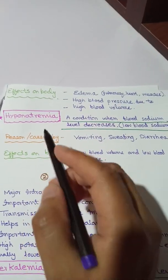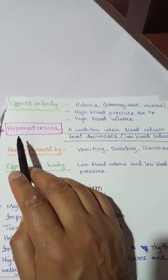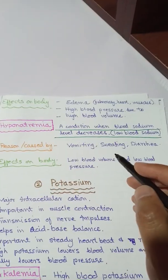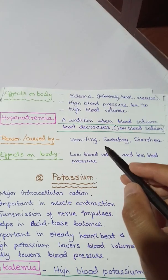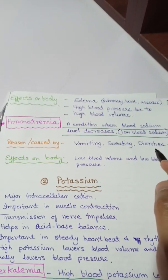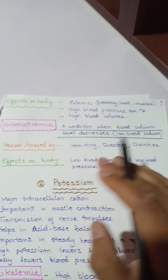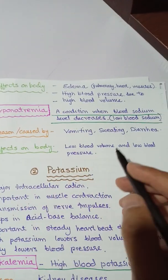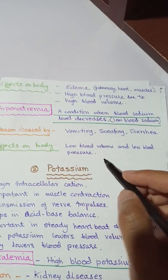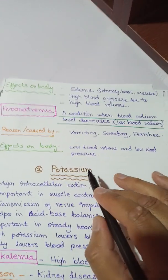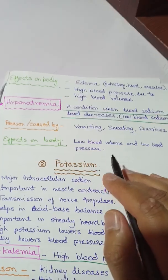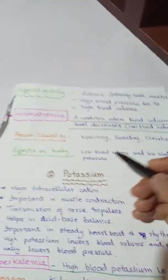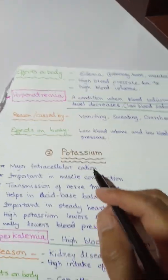The condition in which sodium level decreases or lowers in our body is called hyponatremia. It occurs due to vomiting, sweating, or diarrhea. The effects on our body include low blood volume, and due to low blood volume blood pressure lowers down. We then take sodium salts or liquids so that blood volume increases and blood pressure is maintained.